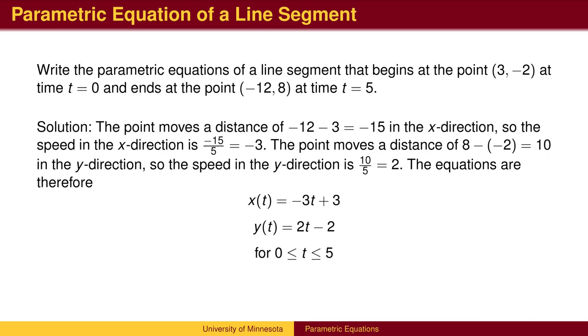In the x direction, the point moves from 3 to -12 for a total of left 15, which happens as t changes from 0 to 5, so the x-coordinate decreases by 3 for each unit of time. Similarly, the y-coordinate goes up 2 in each unit of time.